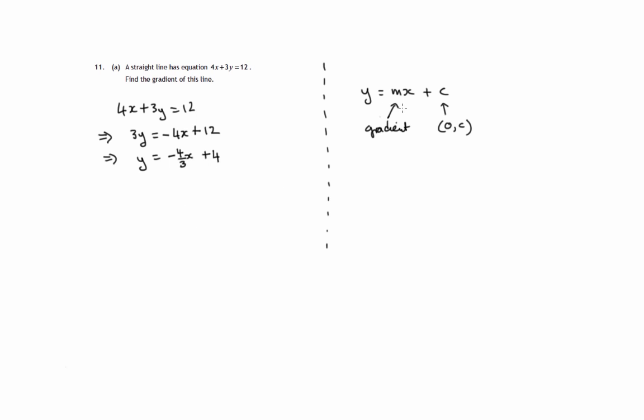So we now have it in the form y equals mx plus c. So we can say the gradient is negative 4 thirds. So that's the gradient of the line. Let's look at the second part of the question.